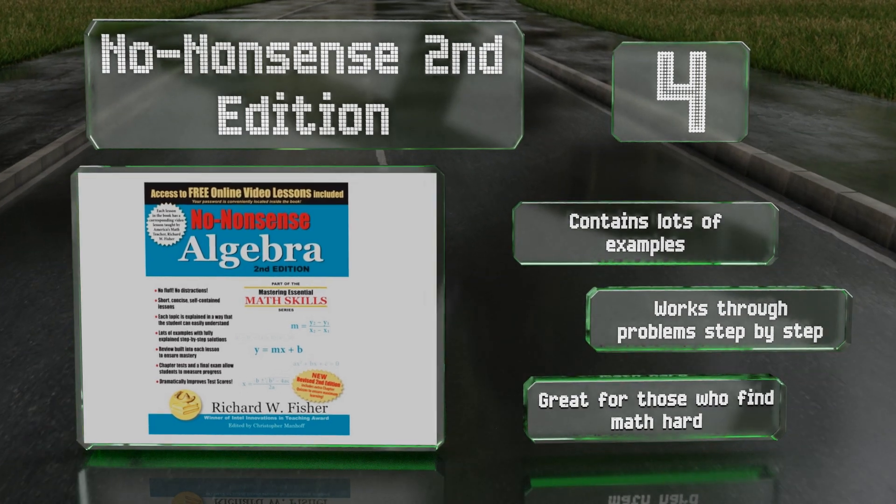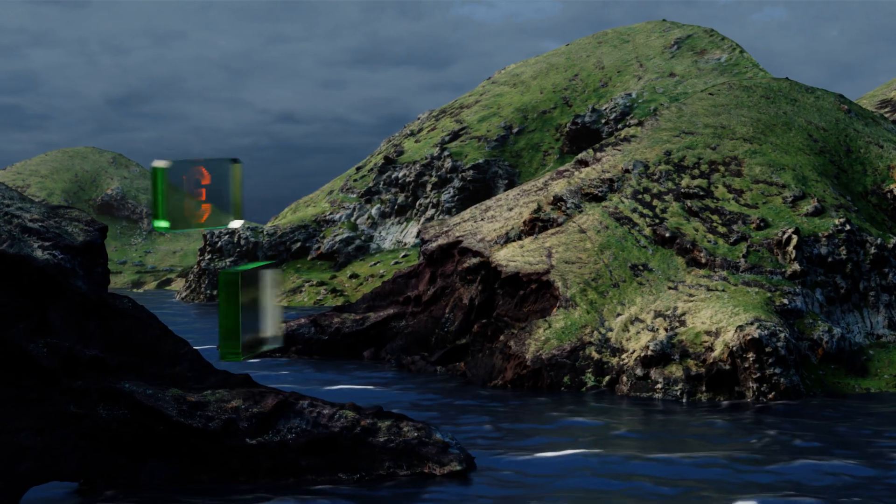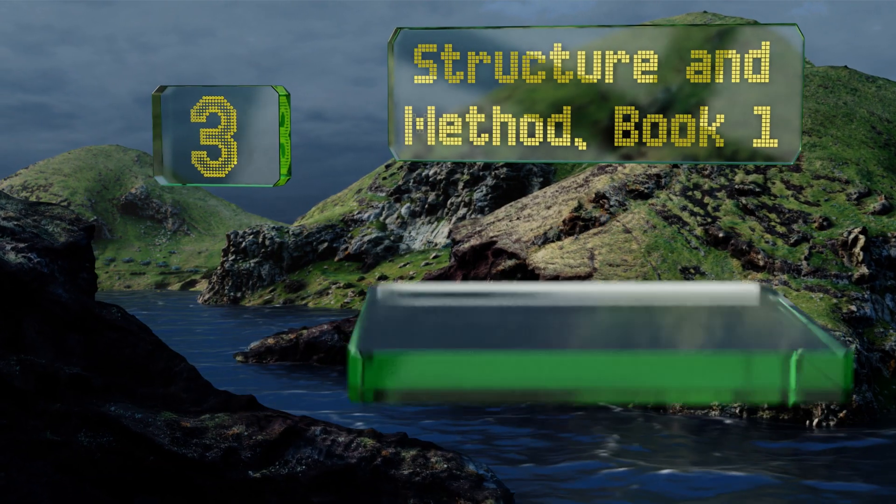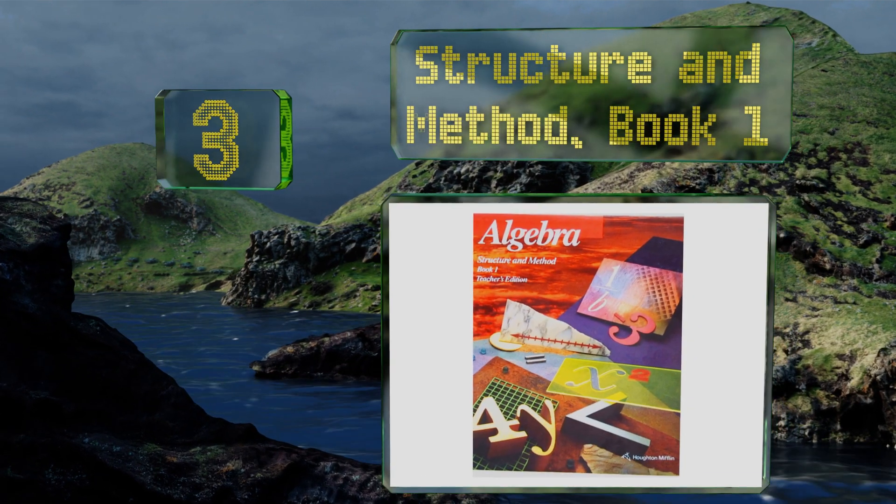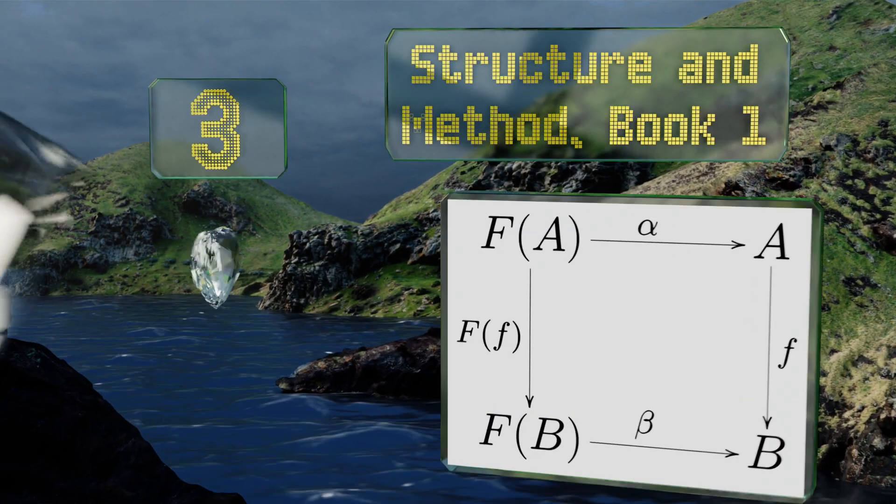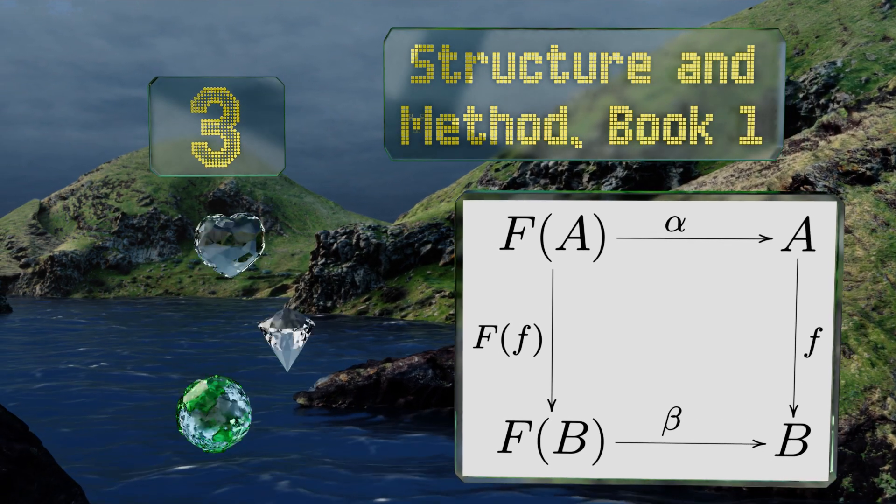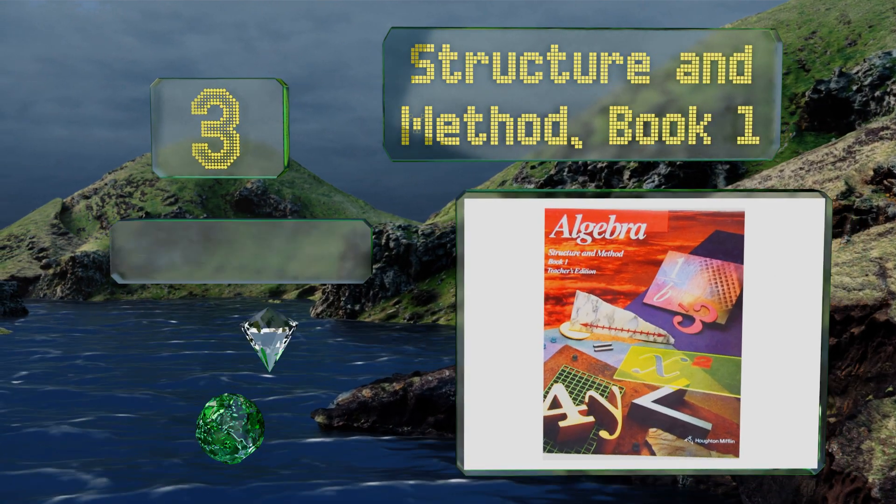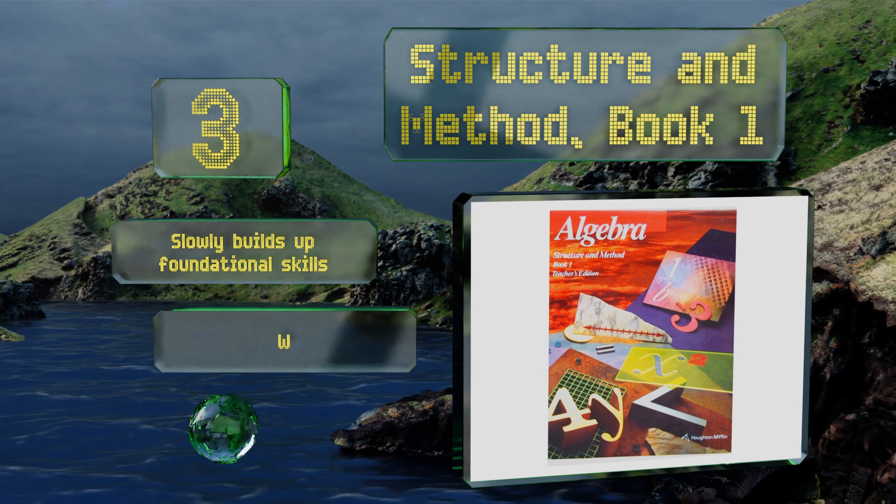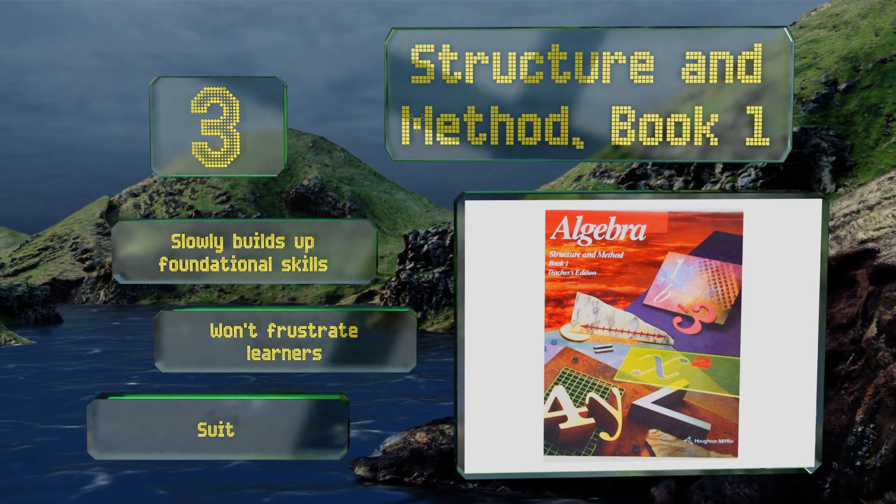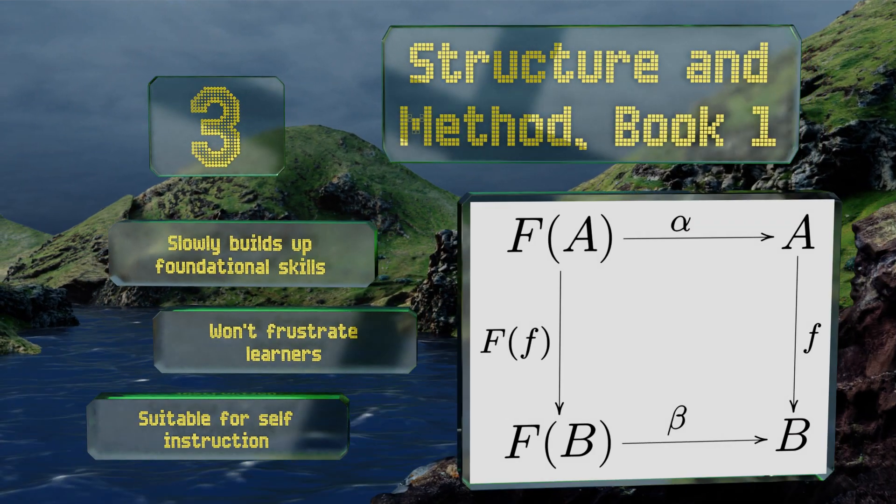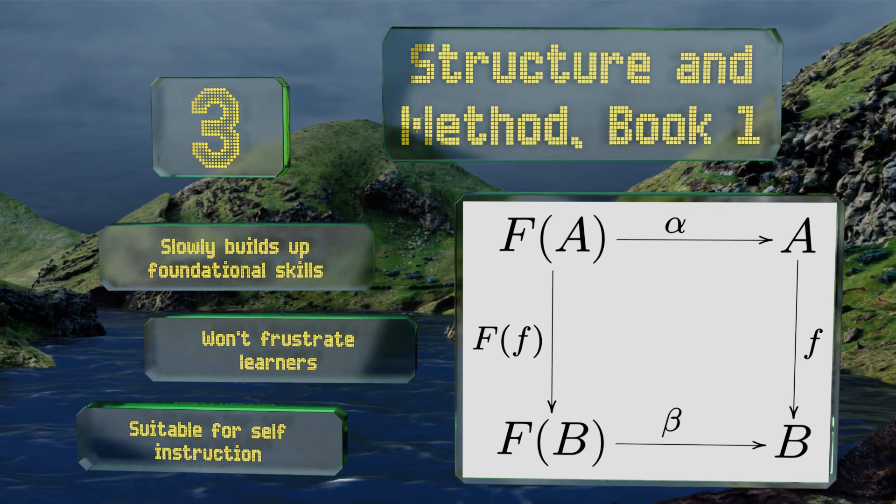Nearing the top of our list at number three, Structure and Method Book 1 may not have as many pictures or frills as some other options, but it might just have the best sequencing. The problems incrementally get harder as students work through the book so they never feel overwhelmed. It slowly builds up foundational skills and won't frustrate learners. It's suitable for self-instruction.